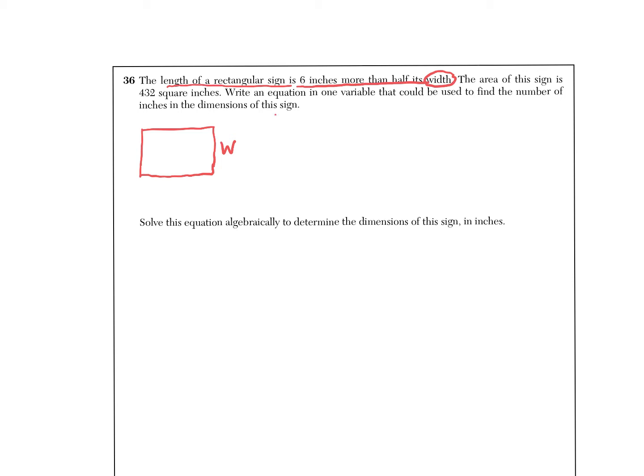If the width is w, you could say a let statement here, let w equal width, that way you're reminded but you also have it in your drawing. Six inches more than half the width would be one half or 0.5w plus six.